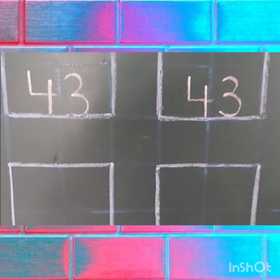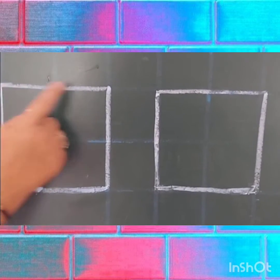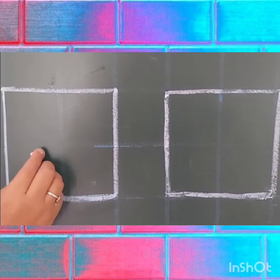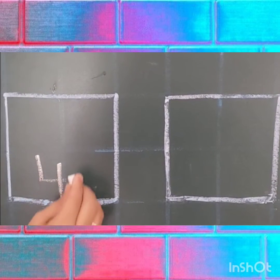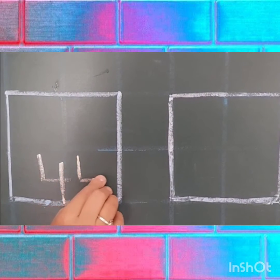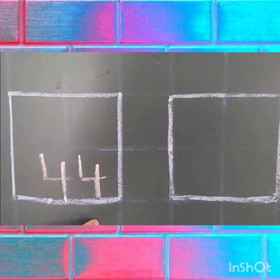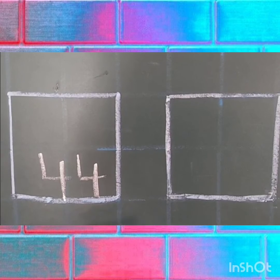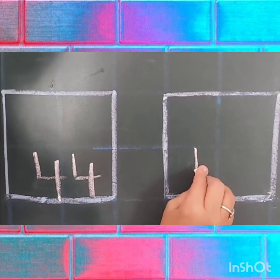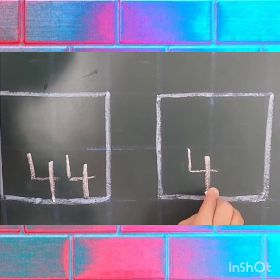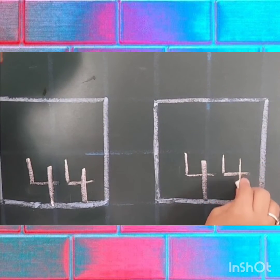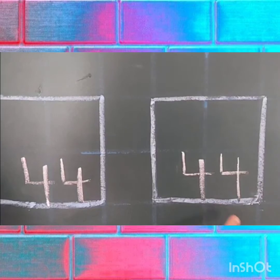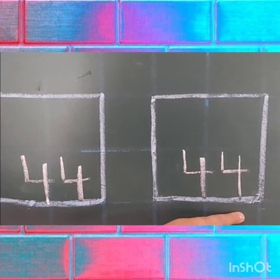Now, we will write number 44 in square boxes. First, we will write number 4, then again number 4, 44. One more time. Number 4, touch the down line. Again number 4, 44.